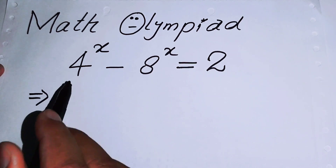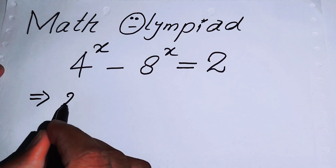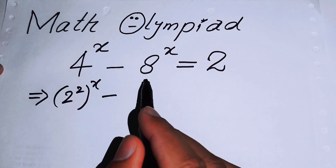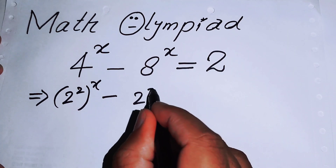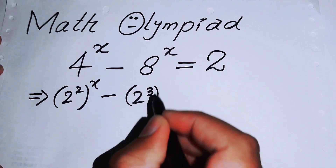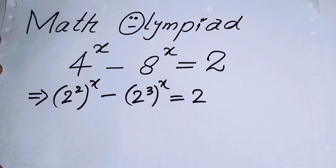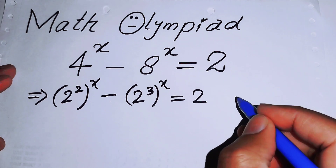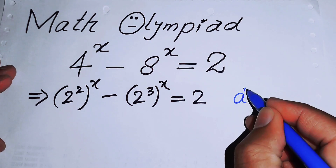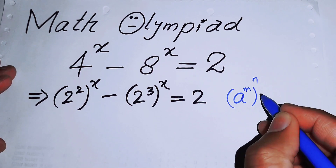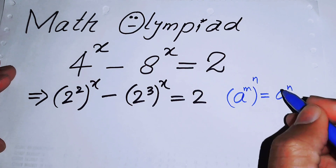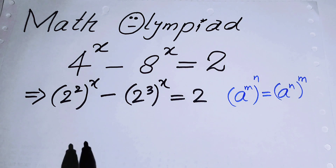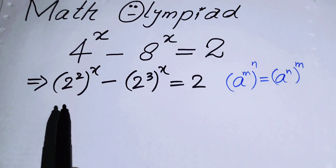The first thing we are going to do is write 4 as 2 squared, with its whole power x, minus 8 written as 2 to the power of 3, with its whole power x, equals 2. Then we apply the exponent law: a to the power of m, to the power of n, equals a to the power of n to the whole power m.